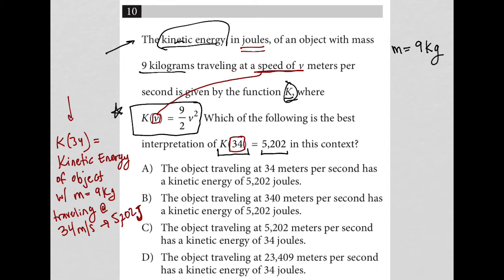So all I've done here is translate exactly what I read. I know K is kinetic energy in joules. I know V is speed in meters per second. I know that that K of 34 equals this value. So I'm just putting all of that together.